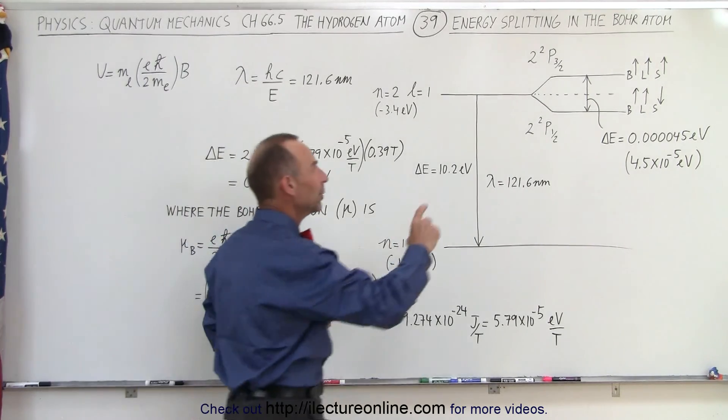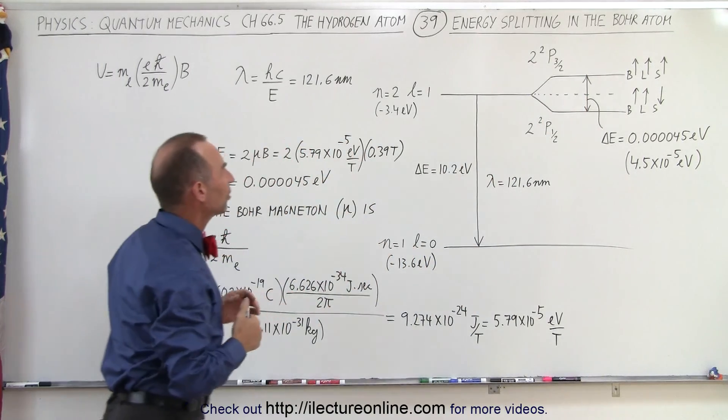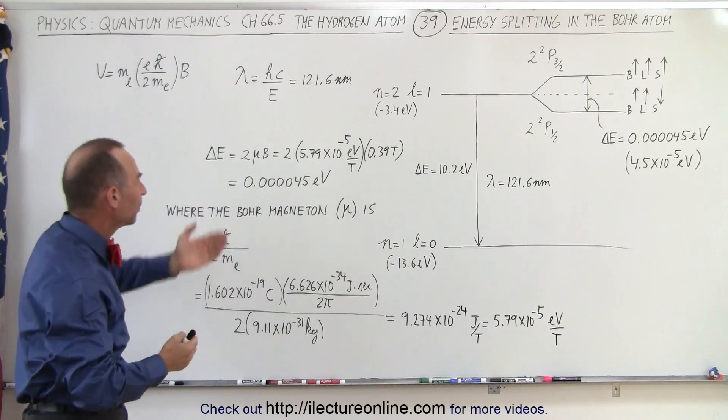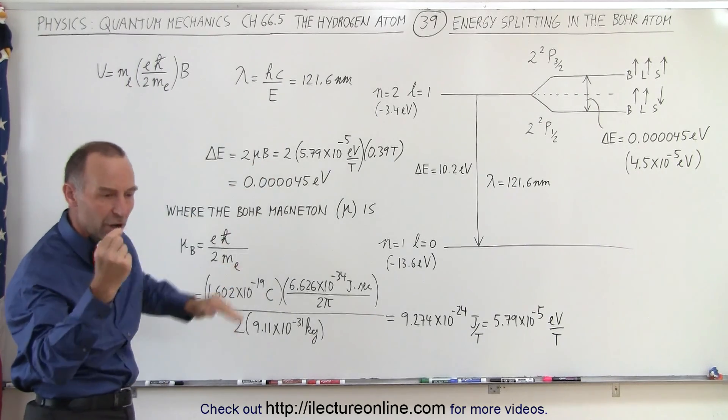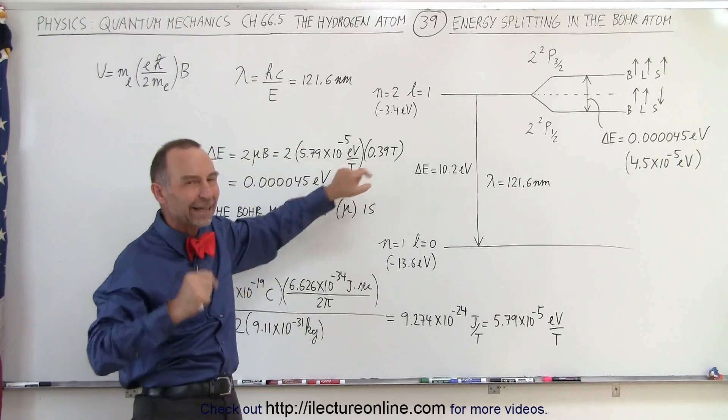Now, how do we calculate the difference in the energy level? Well, the difference in the energy level would be twice mu times b. Now what's mu and what's b? Well, b is the magnetic field caused by the orbiting electron, which is about 0.39 teslas.